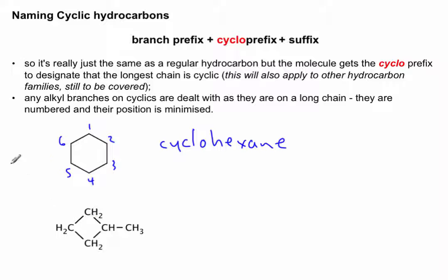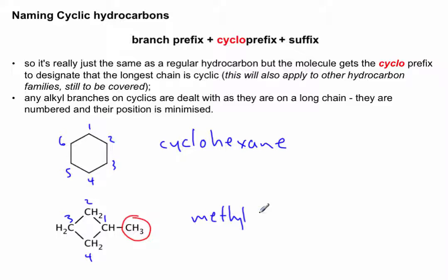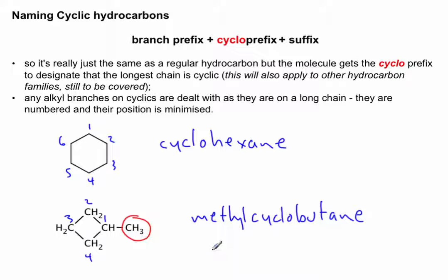In the second example, I have the longest continuous chain being the ring. I'm going to start numbering from where a branch is, because that minimizes the position of the branch. The ring is four carbons long, so that's a cyclobutane, and on carbon one I have a methyl branch. Now if this is the only branch, I don't need a number — I can just call this methylcyclobutane. Because it's only one single branch, it has to be on carbon one to minimize it, so the 'one' becomes redundant.